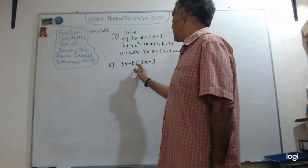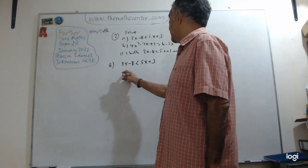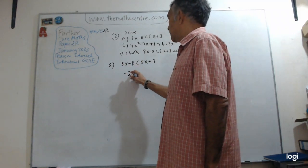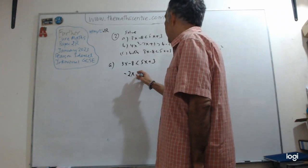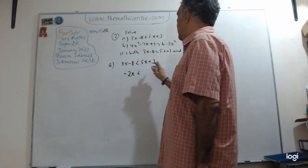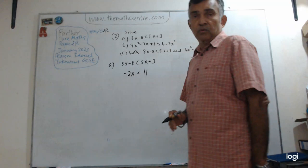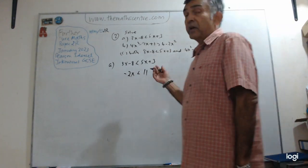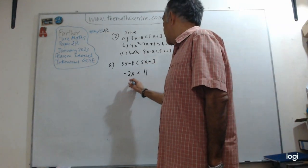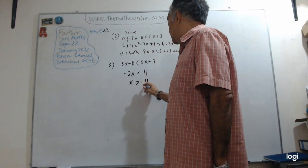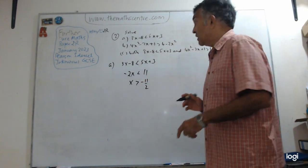Whichever way you want to do it, I brought the 5X to this side. So, 3X minus 5X, and then I have less than. I take this minus 8 to this side. It looks good. If I divide by negative 2, then it becomes X bigger than minus 11 over 2. Careful about this.